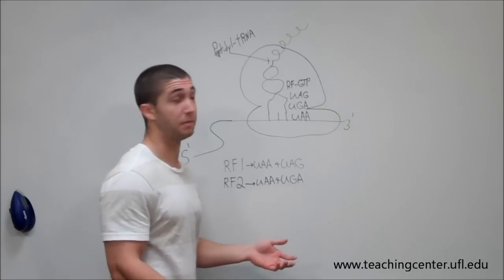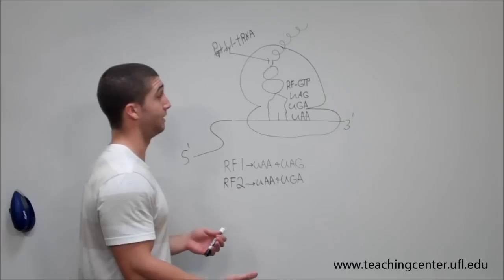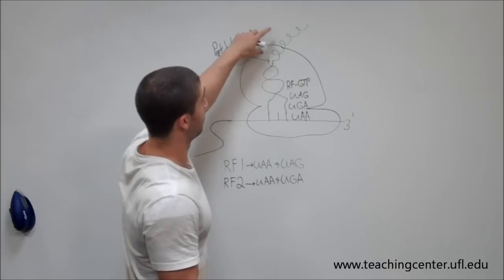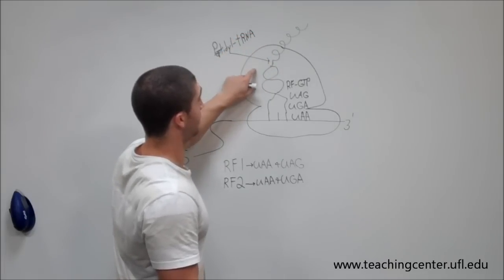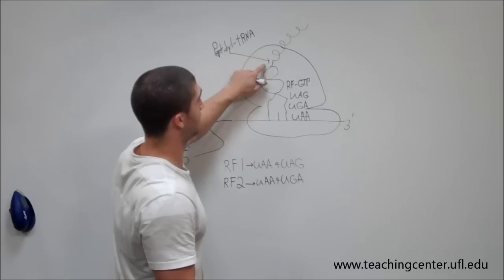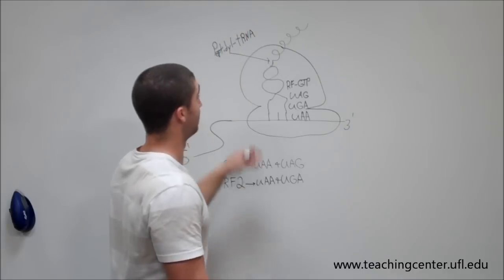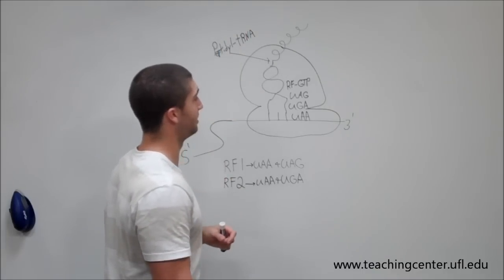So your release factors bind and what the release factor does is facilitate peptidyl transferase to hydrolyze this ester bond between the newly formed polypeptide and your tRNA. So peptidyl transferase will hydrolyze that ester bond which is going to release the newly formed polypeptide and leave you with an empty tRNA located in the P-site.